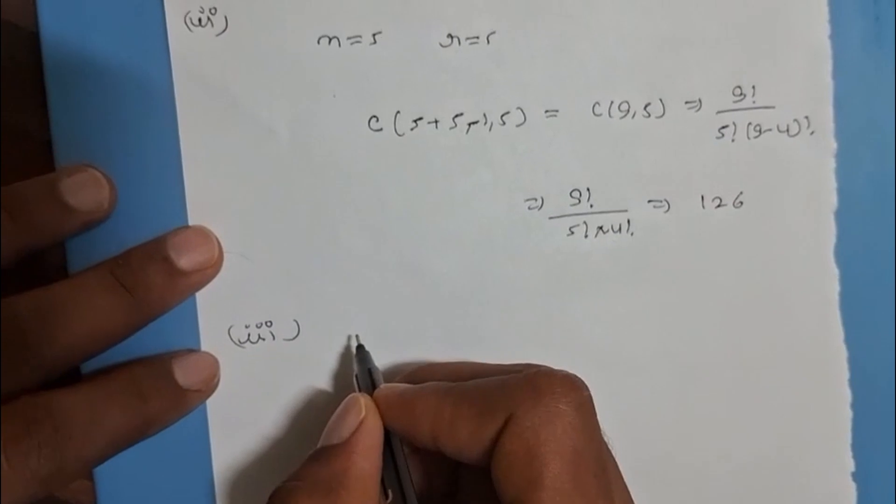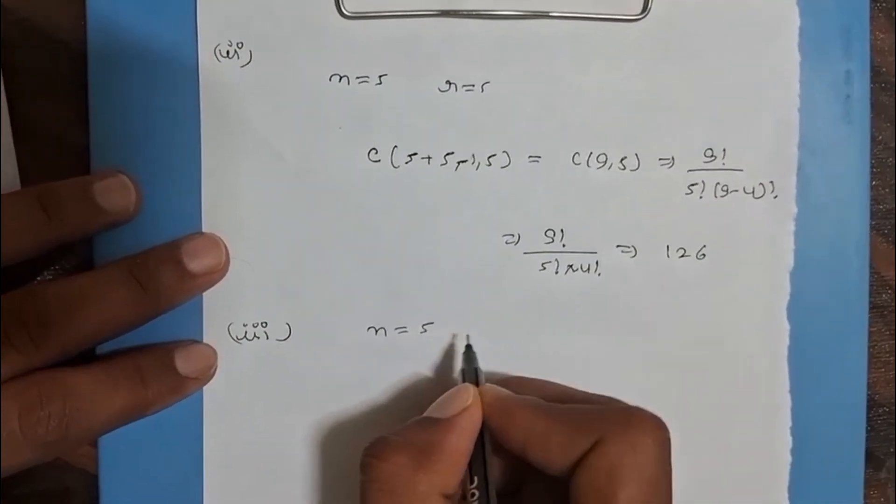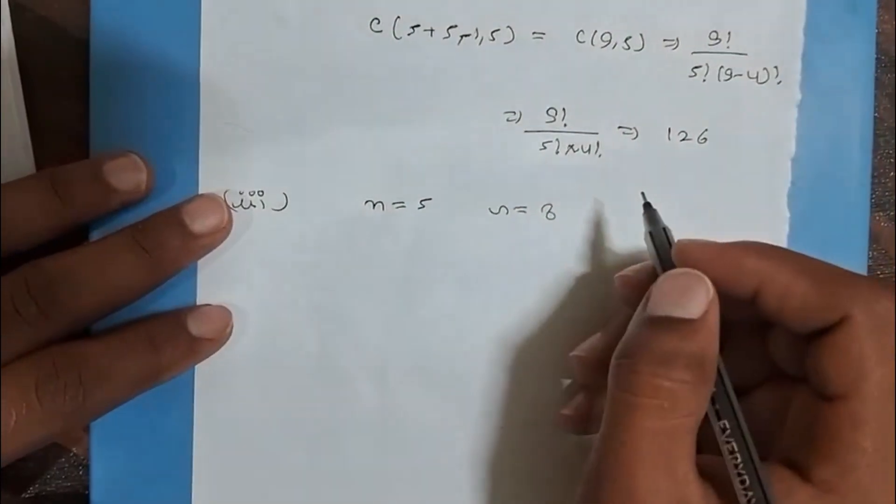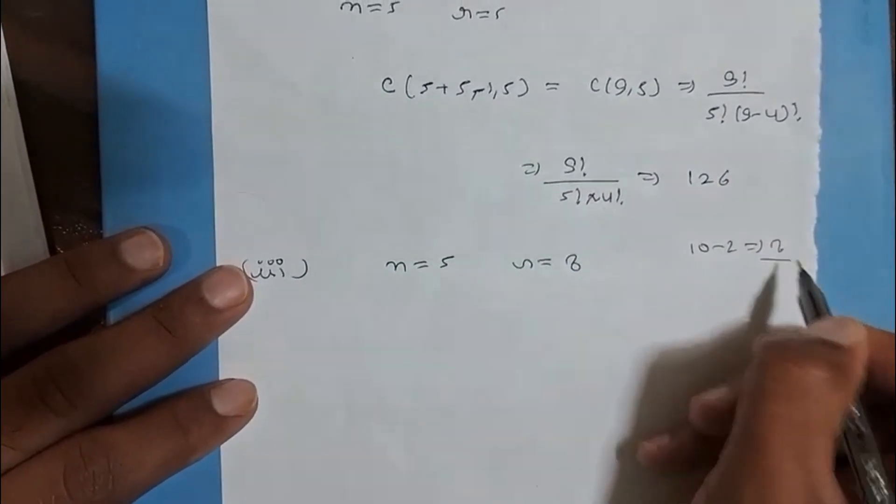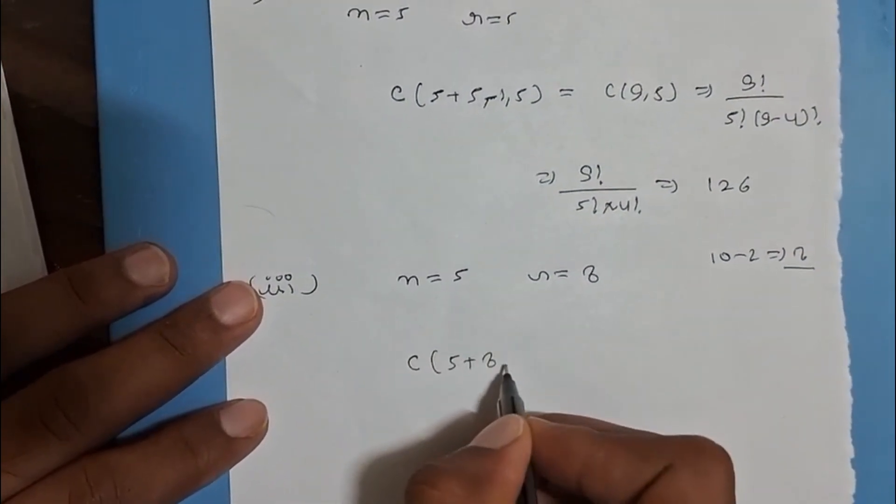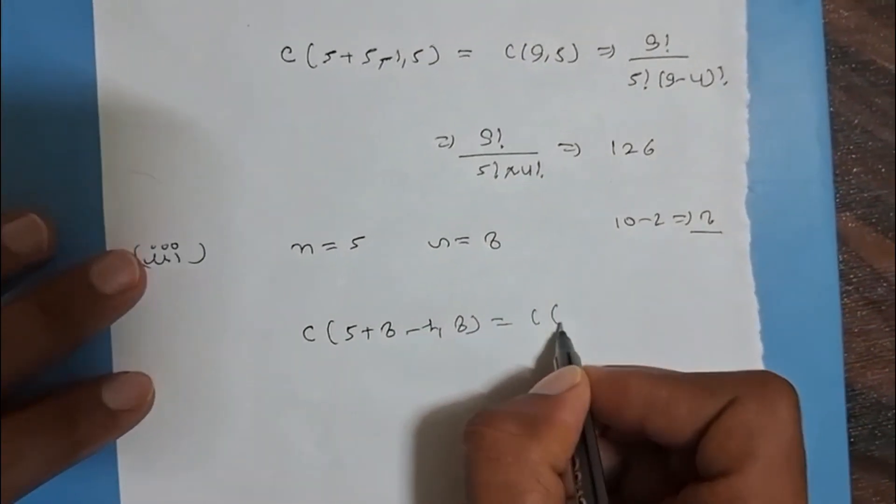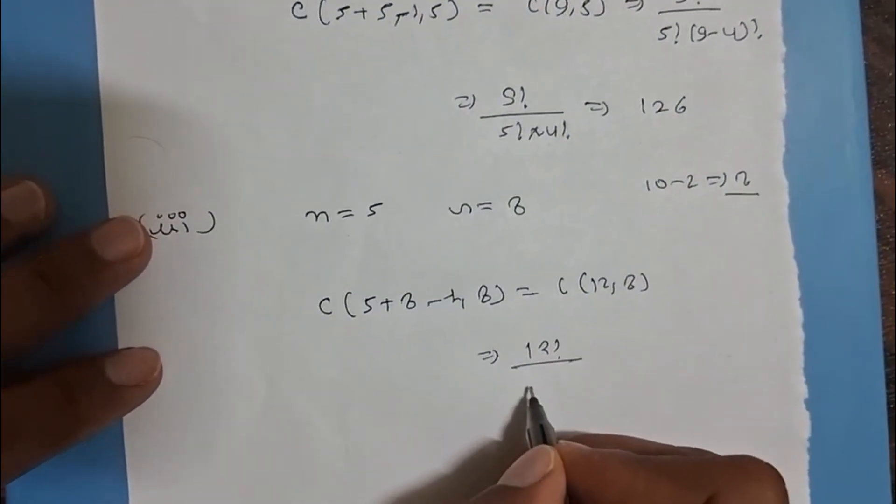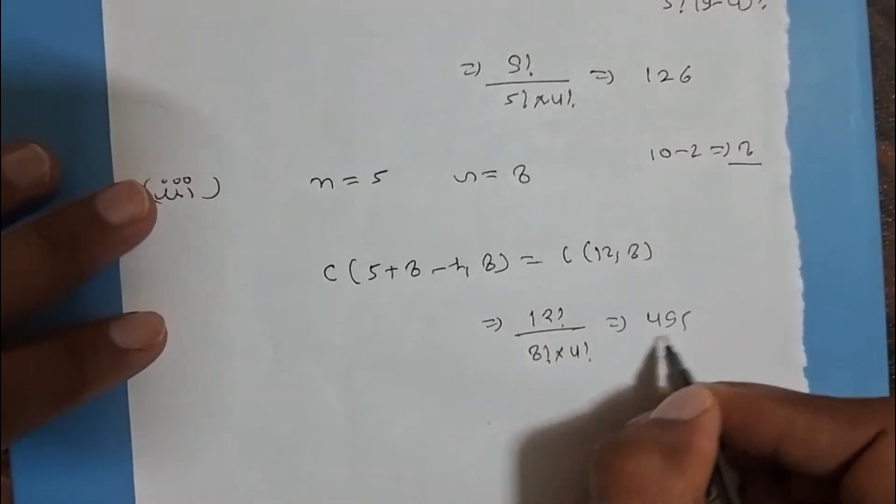Because the youngest gets at least two pencils means 10 minus 2, eight pencils remaining. So C(5+8-1, 8) = C(12, 8) = 12! / (8! × 4!) = 495. So this is our third case.